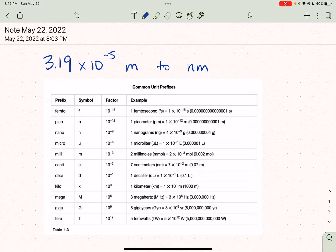I'm going to show you how to do the problem to convert 3.19 times 10 to the minus 5 meters into nanometers.